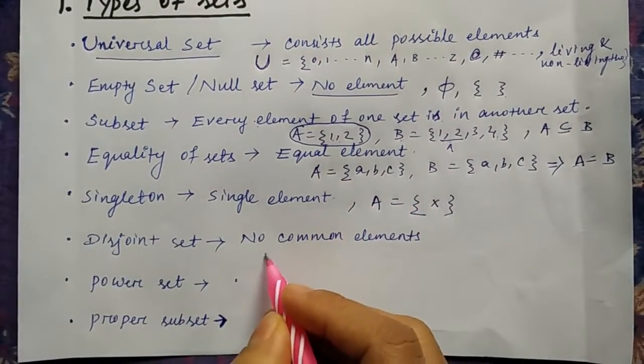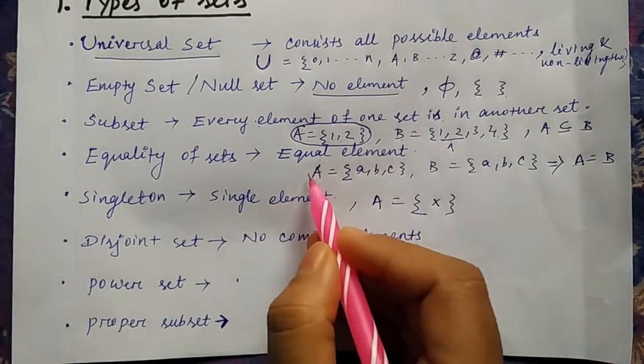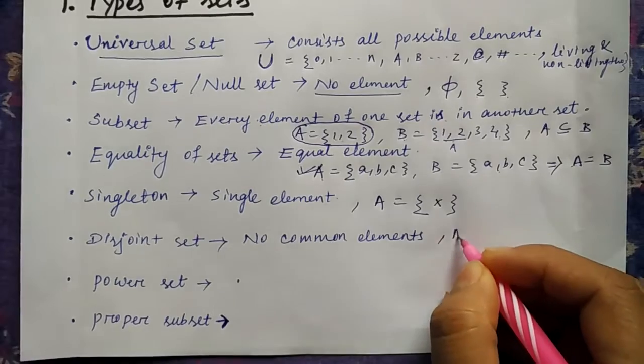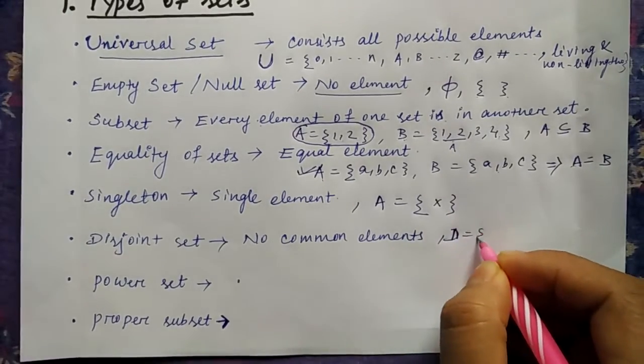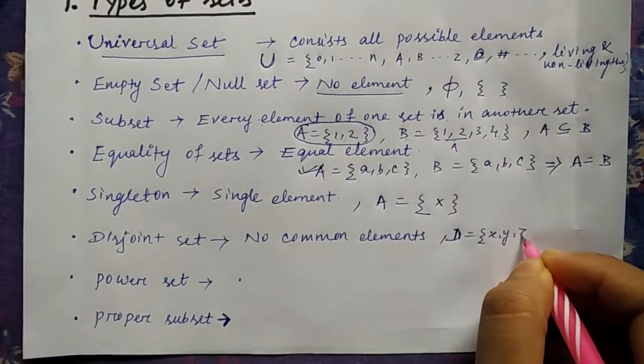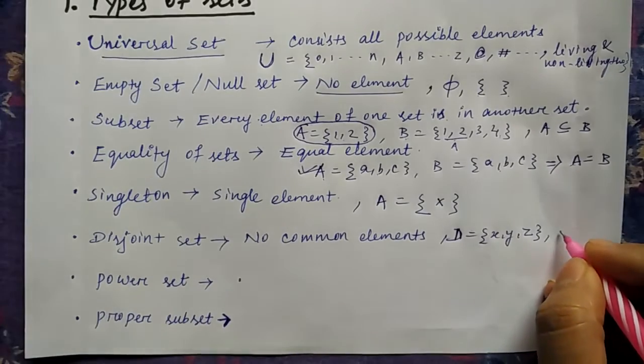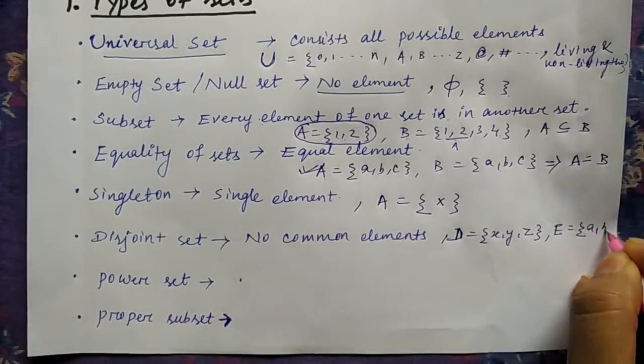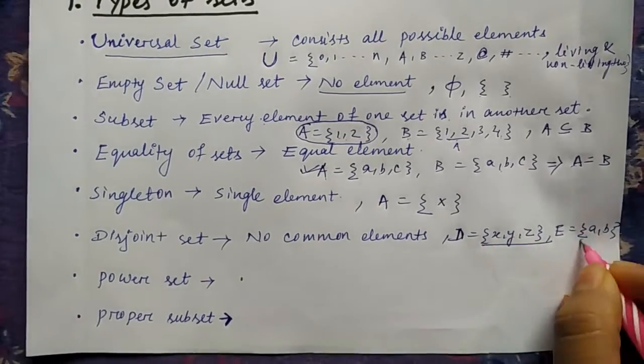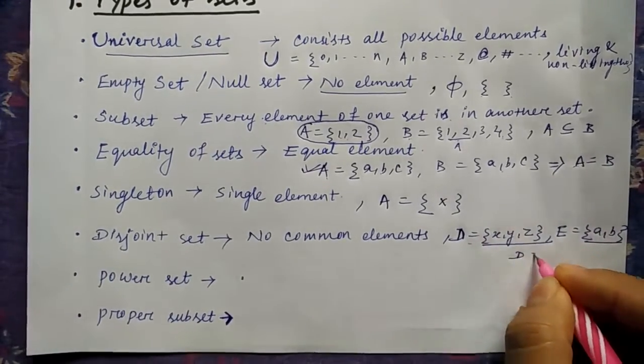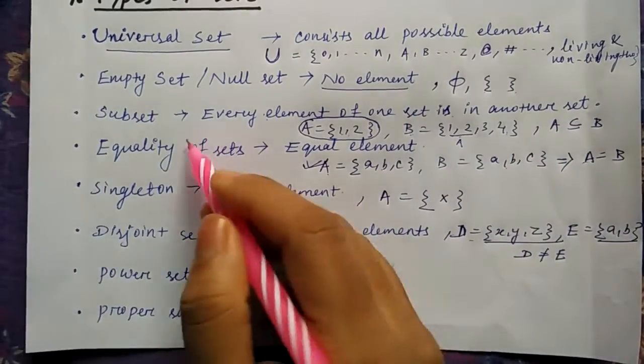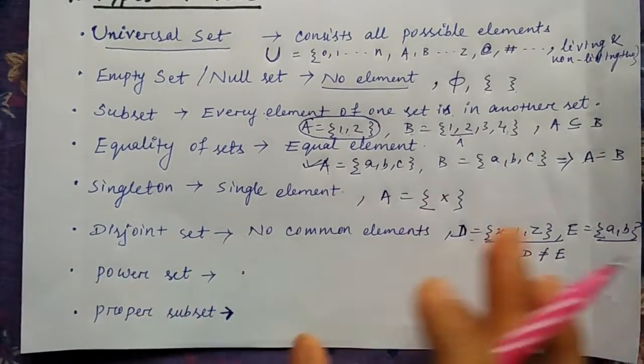Disjoint set means no common element. Like you saw here that A and B is having exactly same elements. Like that I will take some example: D = {x, y, z} and E = {a, b}. So here there is no common element present in between D and E. So that is called as disjoint set. And this will be all very clear when I will go to the Venn diagram.